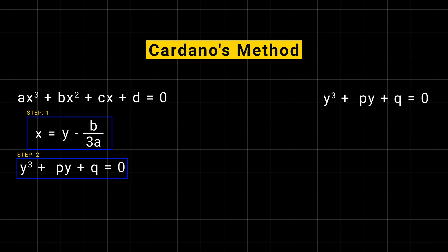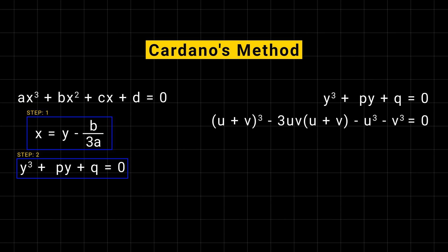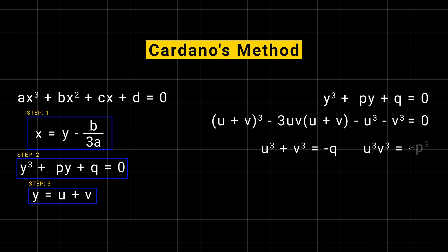If after substitution we get our equation of the form y cubed plus py plus q equal to 0, then we know that u plus v whole cubed equals u cubed plus v cubed plus 3uv times u plus v. So we put y equal to u plus v, and after comparing we get u cubed plus v cubed equal to minus q and 3uv equal to minus p. So u cubed times v cubed equal to minus p cubed over 27. Since these equations specify both the sum and the product of u cubed and v cubed, we can write a quadratic equation whose roots are u cubed and v cubed. The equation is t squared plus qt minus p cubed over 27.